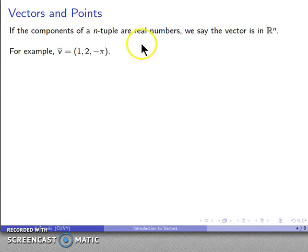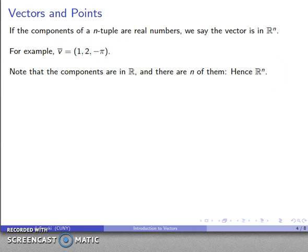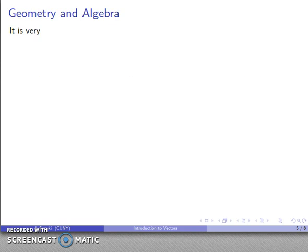For example, we might take the vector (1, 2, -π). That is a three-tuple, in other words, this is a vector in R³.